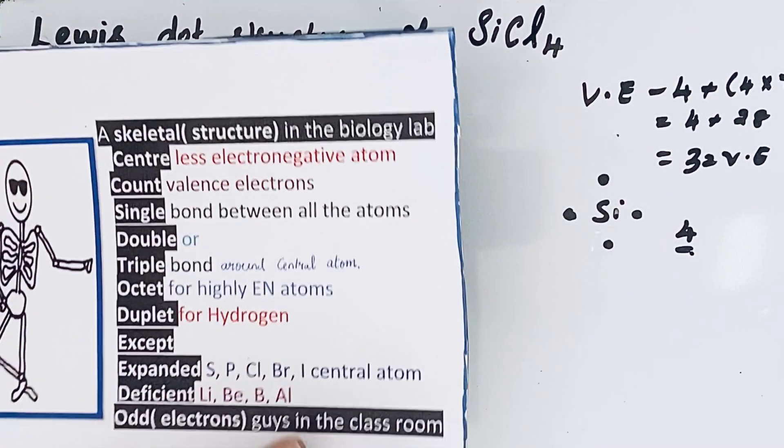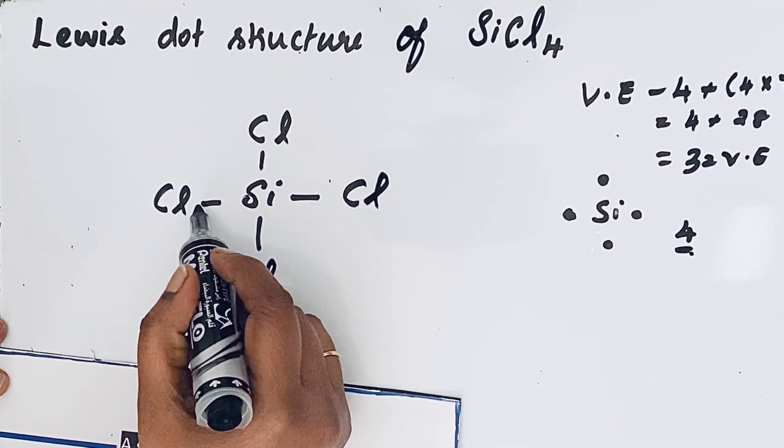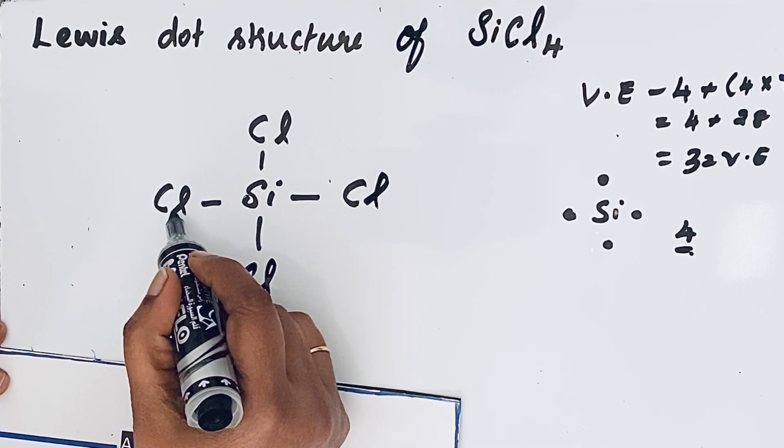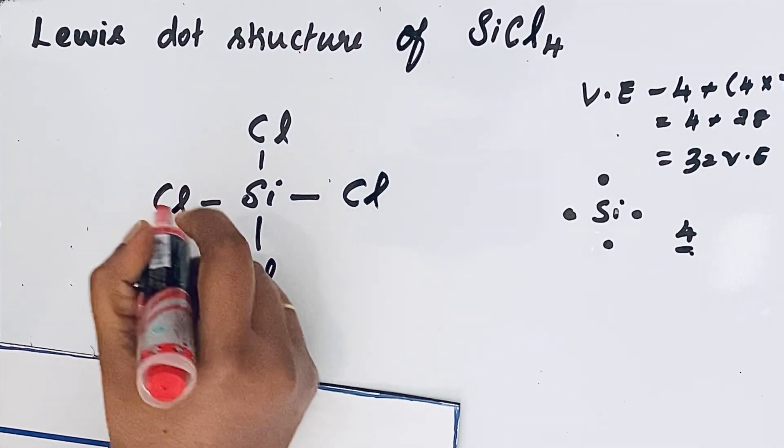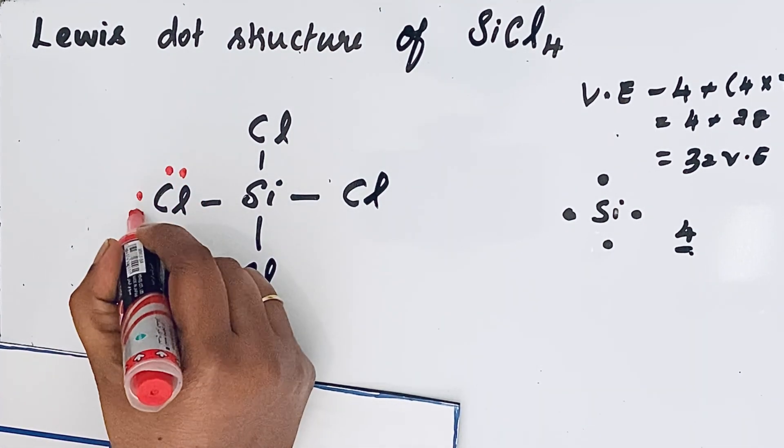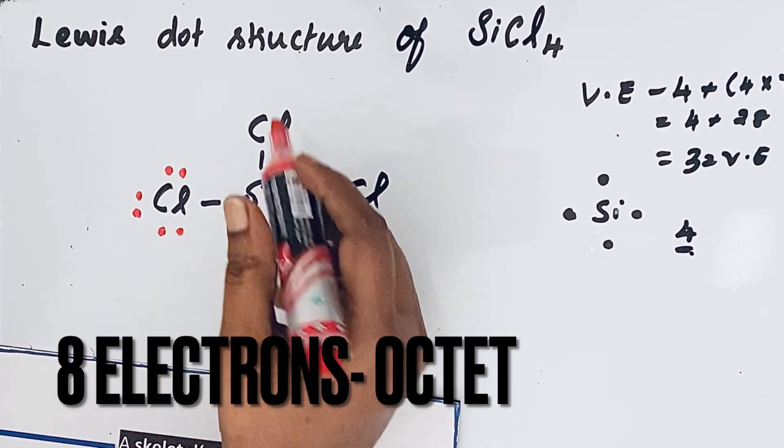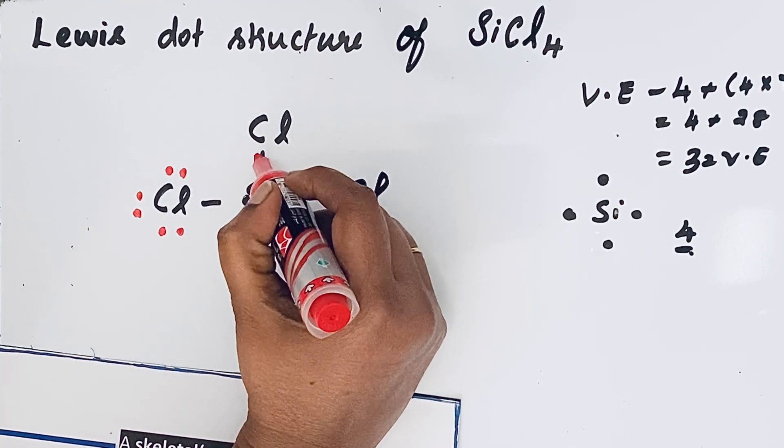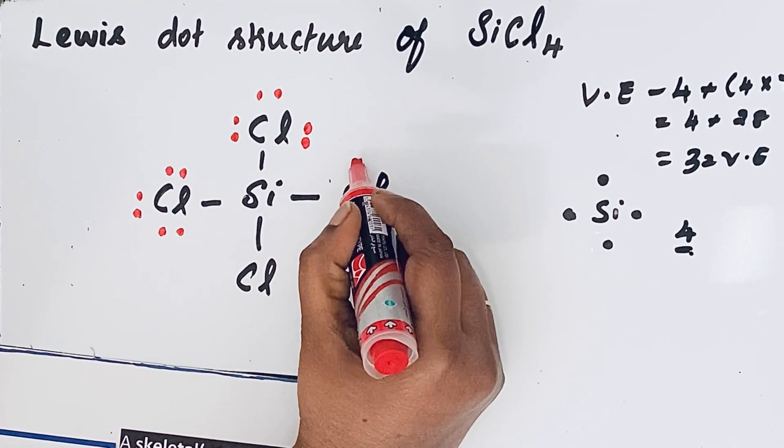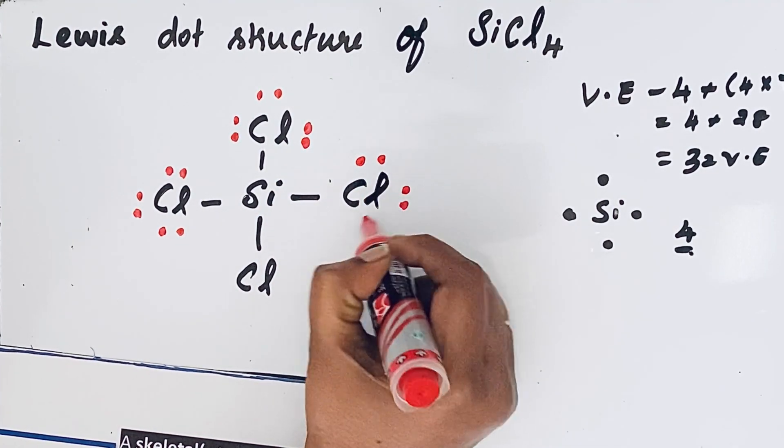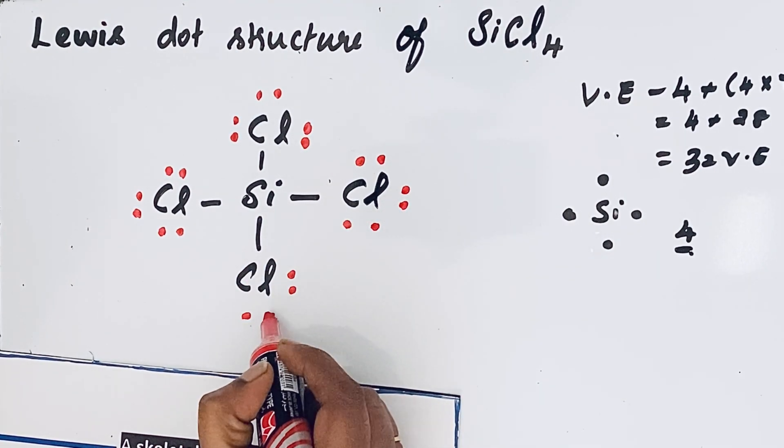So now let us move to the next one: octet for highly electronegative atom. Chlorine is the highly electronegative atom. Here you can see chlorine already has a single bond, so we draw the remaining other electrons: four, six, eight. So for this chlorine atom, octet configuration is completed. Now come to this chlorine: two, four, six, eight. The same way for this chlorine and for this chlorine.